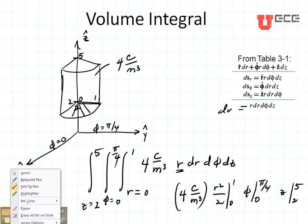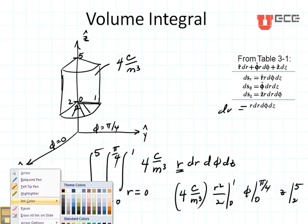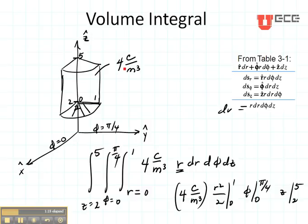Now what would have happened if instead of having a constant value I had had four that was changing with R, which means the current density or the charge density was much stronger out here on the outside of my little cylinder than it was on the inside.